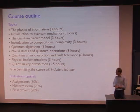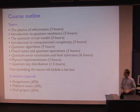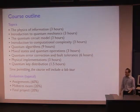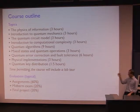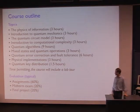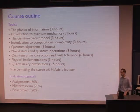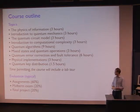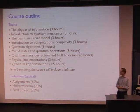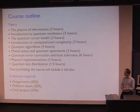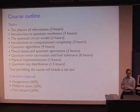So how are you evaluated in this course? Typically, the majority of your mark will come from assignments — something like 60% from maybe five assignments. There's usually a midterm exam, which will be 20% of your mark, and a final project, which consists of reading something in the research literature and writing a paper about it.